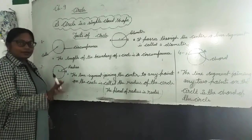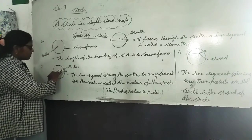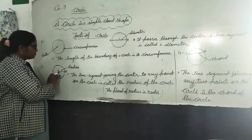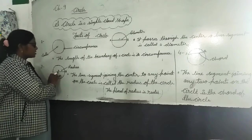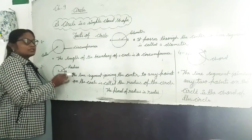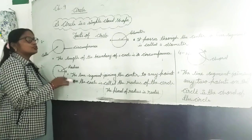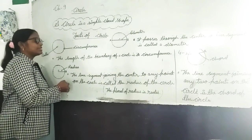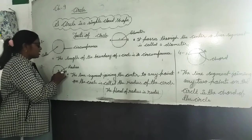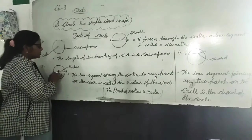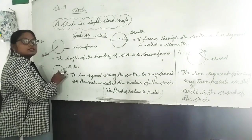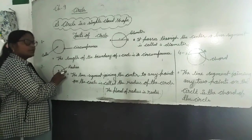Now talking about the radius. The line segment that joins the center to a point on the circle is called the radius of the circle. So, O to B is a radius.